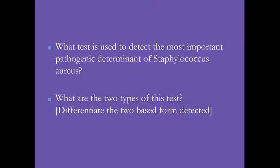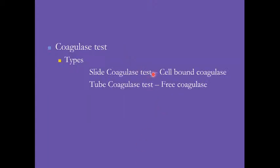For slide coagulase, the reagent is rabbit plasma. For tube coagulase, you use 0.5 mL of rabbit plasma. If using human samples, EDTA is the preferred anticoagulant because citrate may cause false positives. The maximum allowable time for performing the coagulase test is 4 hours and it should be checked every 30 minutes.